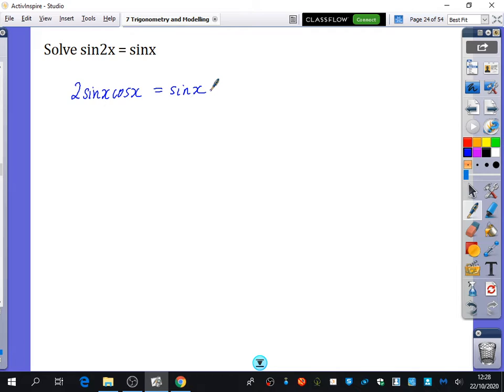So you have to be really careful you don't miss out solutions when you cancel things out. So here, the temptation is just to cancel out sin(x) or to divide by sin(x) and replace it with a 1 so that you end up with 2cos(x) equals 1. In other words, cos(x) equals a half, and then you finish solving the equation.